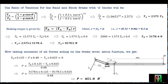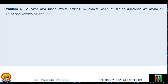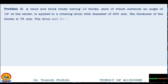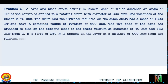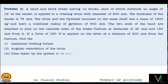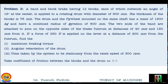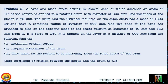Now let's move to the second problem. A band and block brake having 12 blocks, each subtending an angle of 16° at the center, is applied to a rotating drum of diameter 600 mm. The block thickness is 75 mm. The drum and flywheel on the same shaft have a mass of 1800 kg with a combined radius of gyration of 600 mm. The two band ends are attached to pins on opposite sides of the fulcrum at distances of 40 mm and 150 mm. A force of 250 N is applied at 900 mm from the fulcrum. Find: (1) maximum braking torque, (2) angular retardation, (3) time to reach stationary from 300 rpm. Coefficient of friction = 0.3.